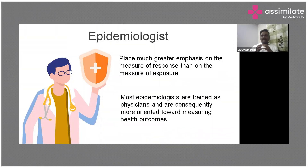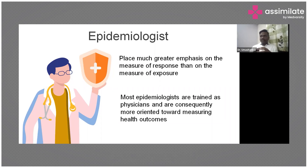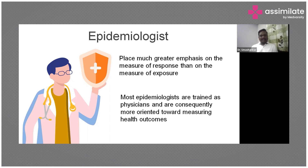As an epidemiologist, our greater emphasis is on the measure of the response than on the measure of the exposure. We have to control the disease, so we have to look at how we prevent it. Most epidemiologists currently are trained first as physicians and then as epidemiologists, so we tend towards measuring the outcome more than the exposure. But we have to do both — measure the exposure and the outcome — and try to prevent the disease. This should be our main work.